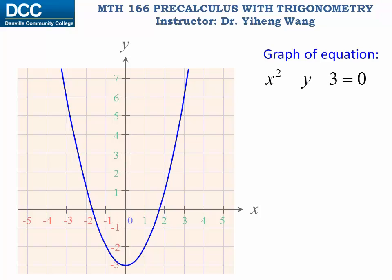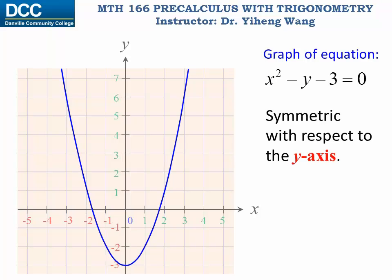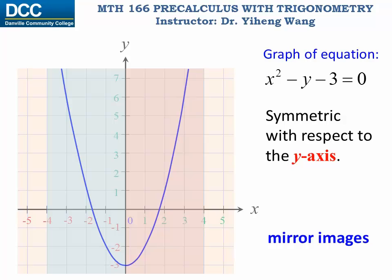This is the graph of the equation x squared minus y minus three equals zero. From this graph we can easily tell that it is symmetric with respect to the y-axis. This means that the left side and the right side of the graph are mirror images with respect to the y-axis. So we might ask, what kind of property does this equation have that its graph has this symmetry?